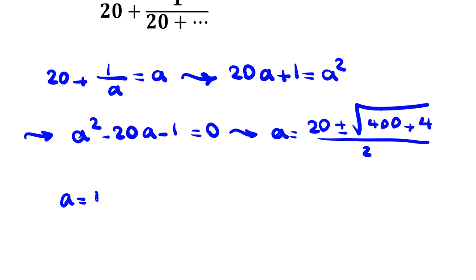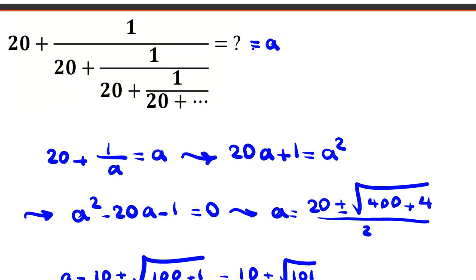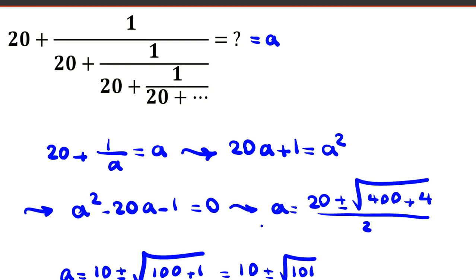If we divide by 4, it will be 100 plus 1. So a will be 10 plus minus root 101. As you can see, a here is positive, it's not negative.